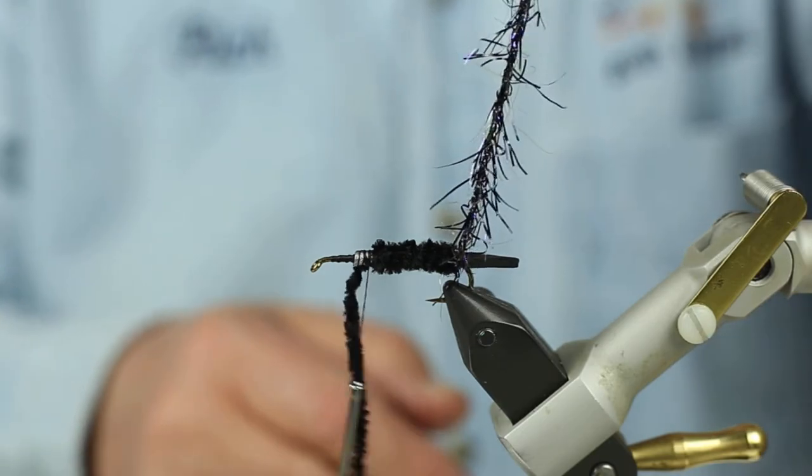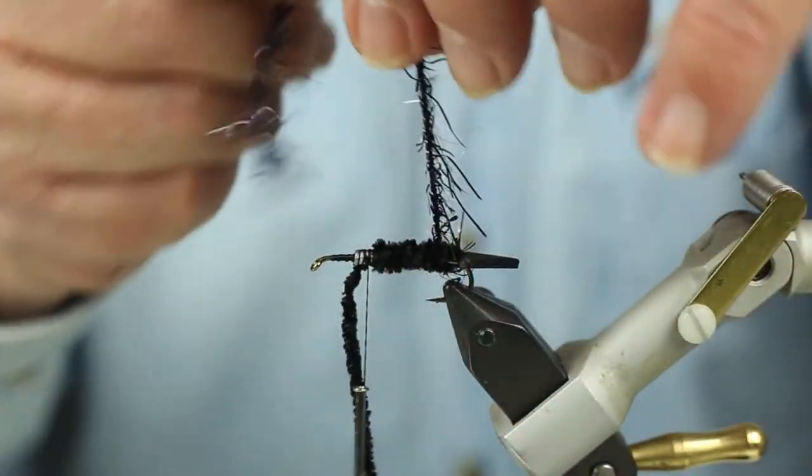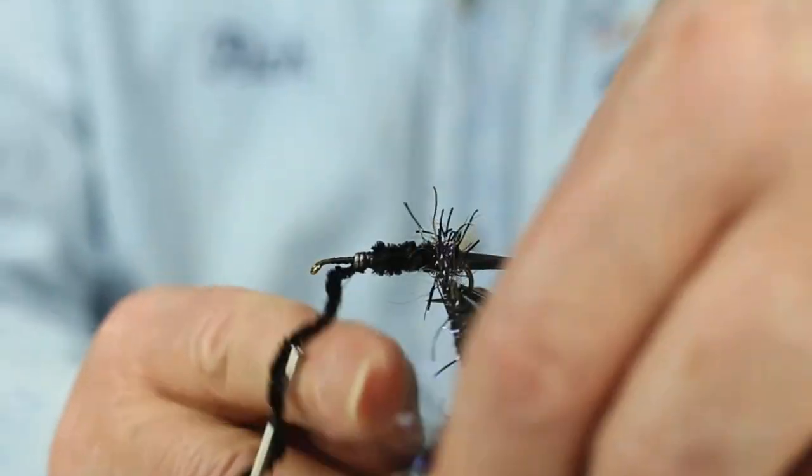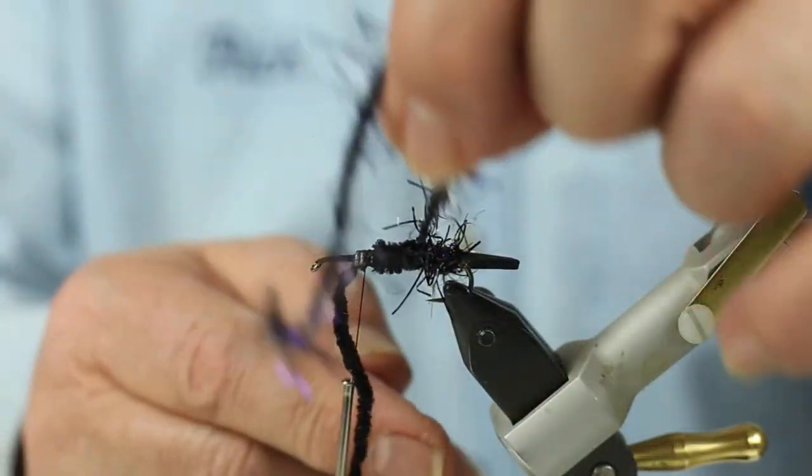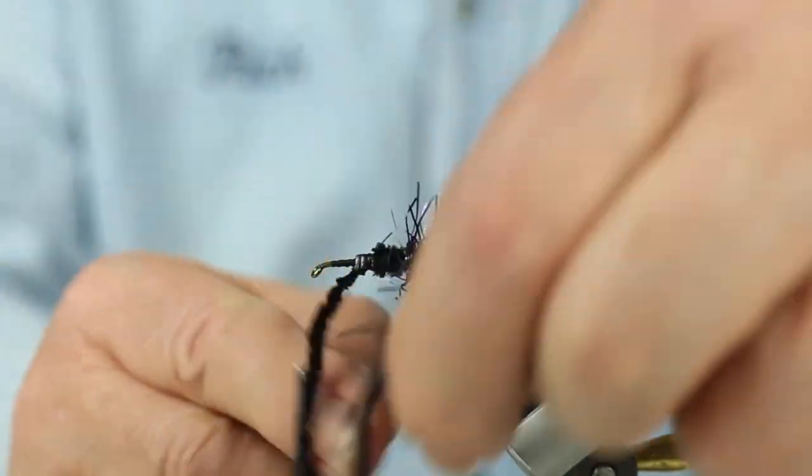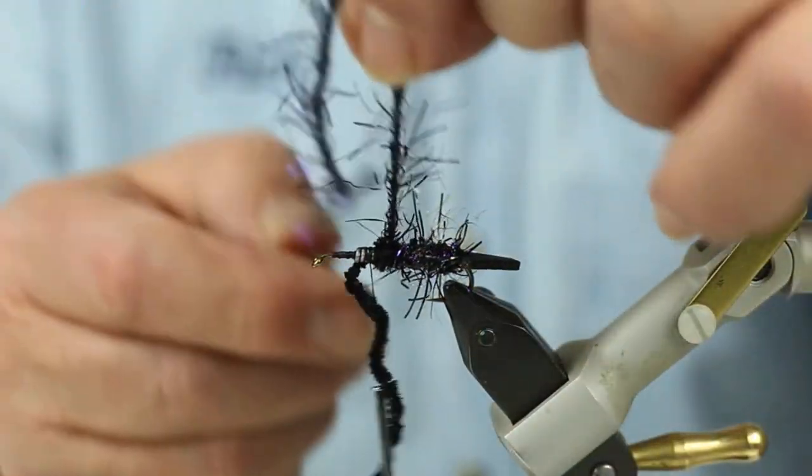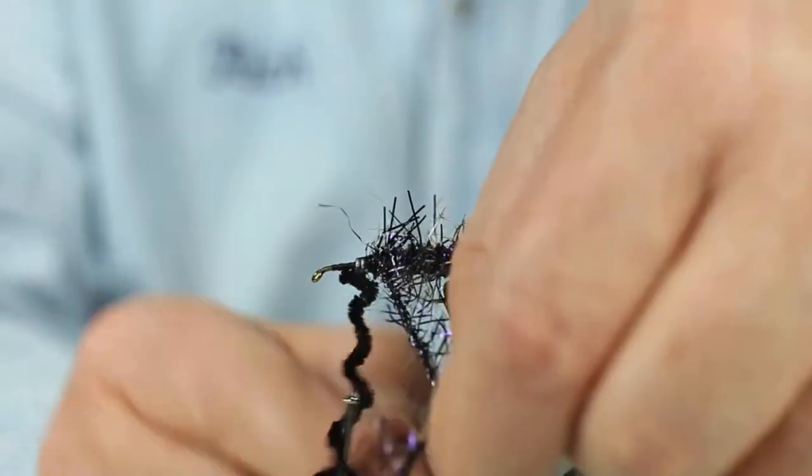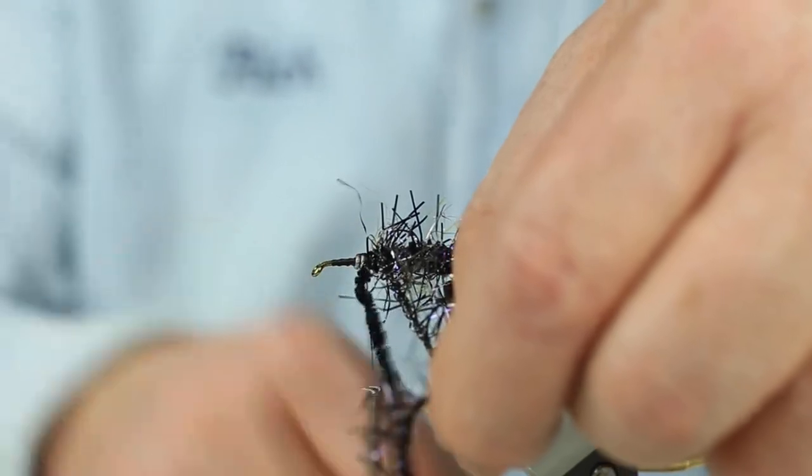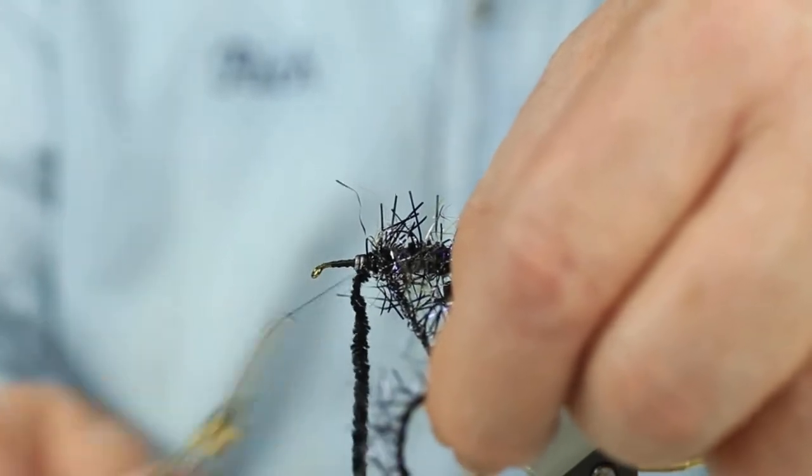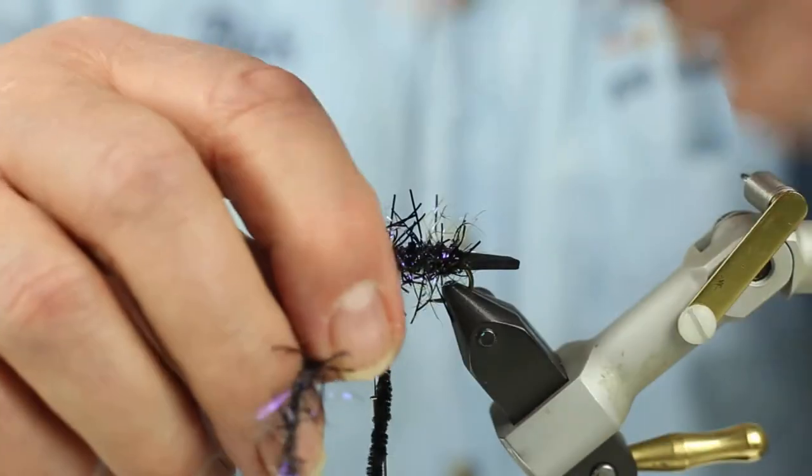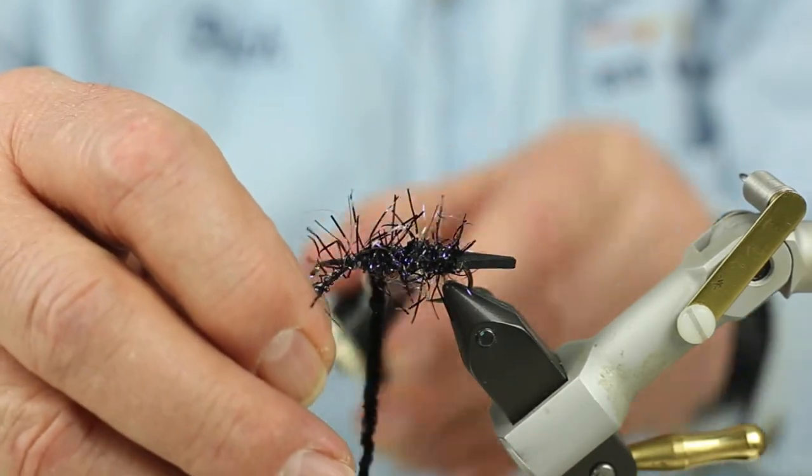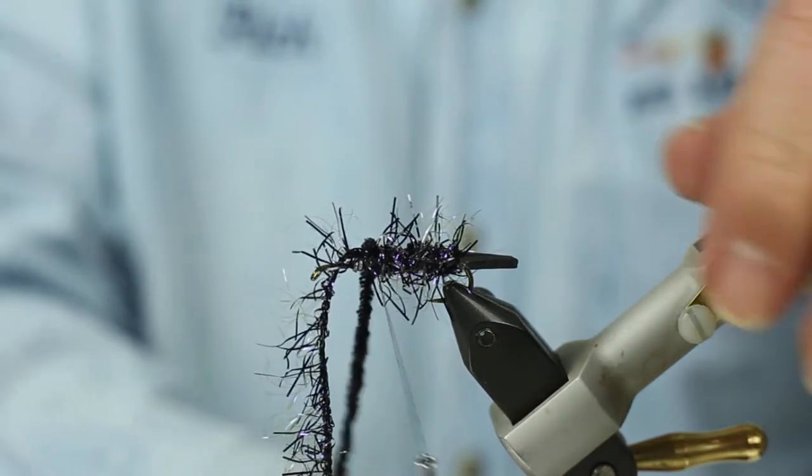Now, I'm going to take the polar chenille and make turns in the gaps of the black chenille up to the same point where the black chenille is tied off. And I'm going to tie off the polar chenille also, but not cut it.